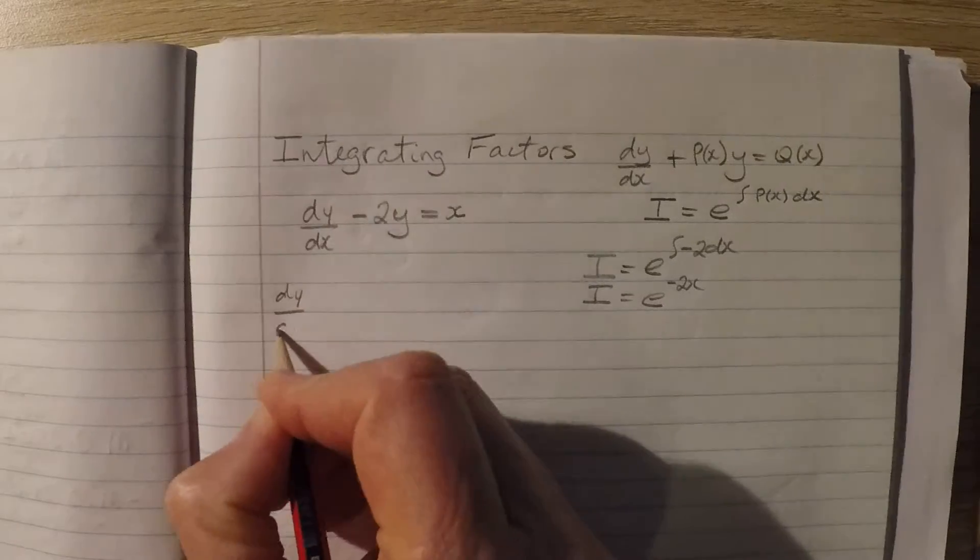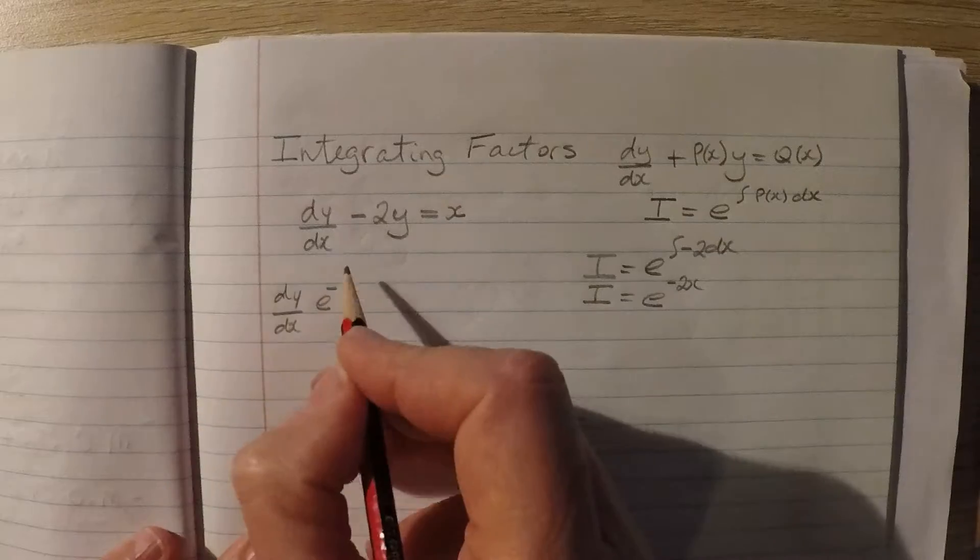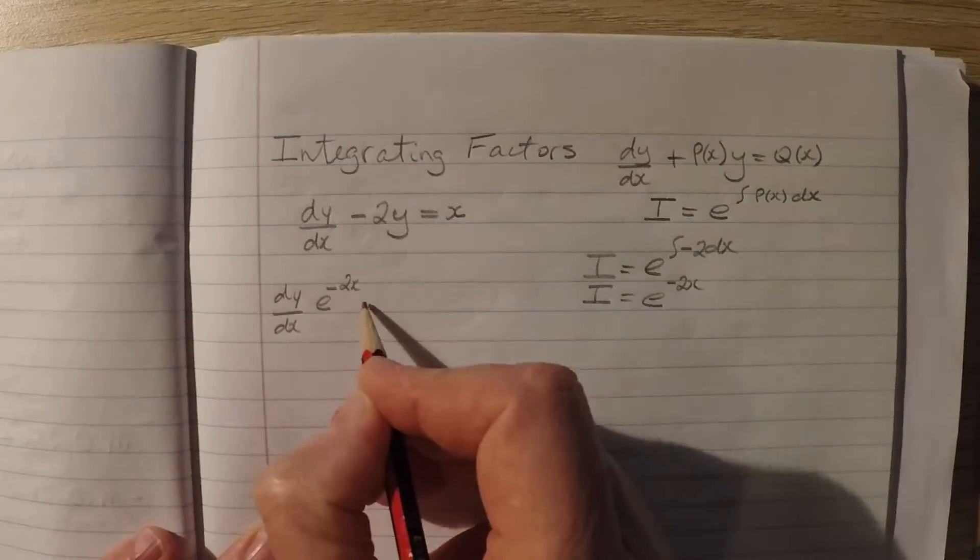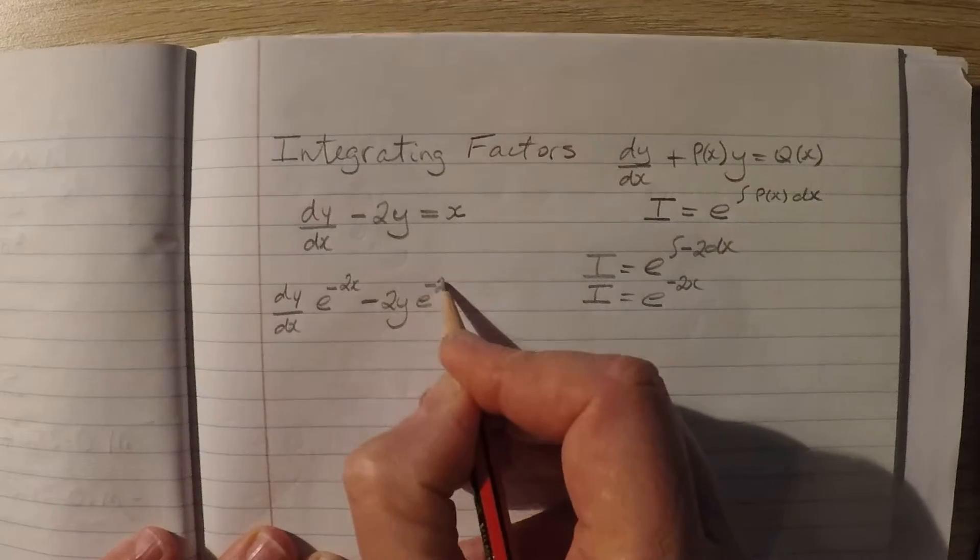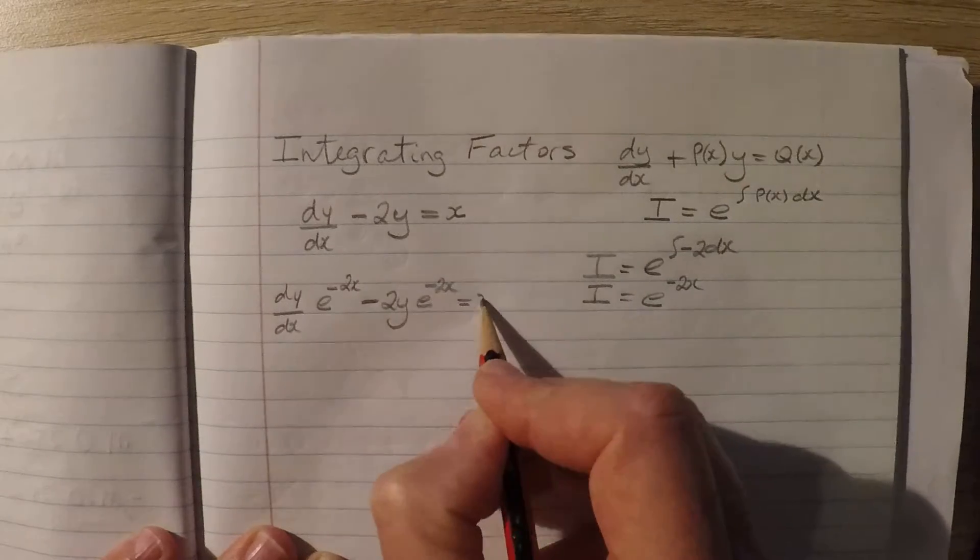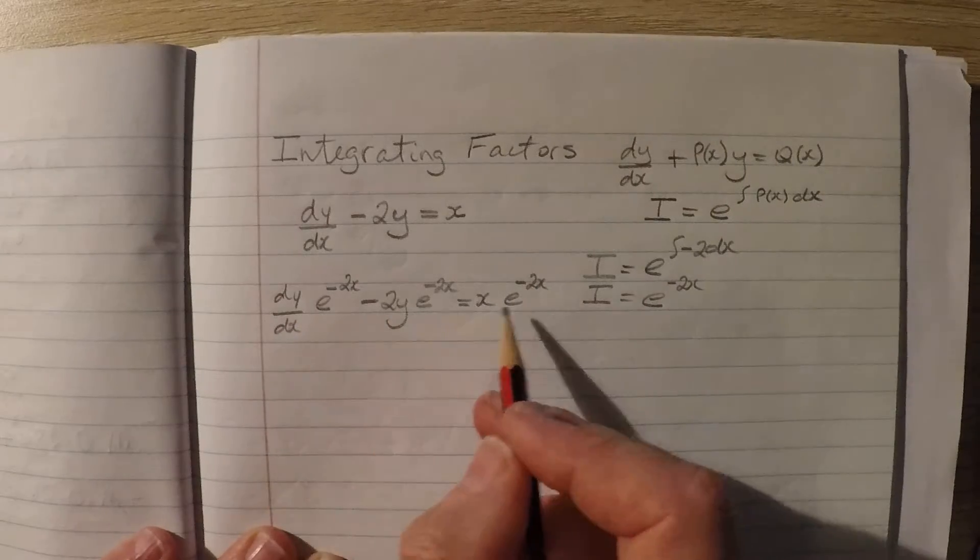So I have dy dx by e to the power of negative 2x minus 2y by e to the negative 2x equals x times e to the negative 2x. All terms have been multiplied.